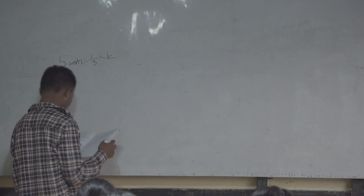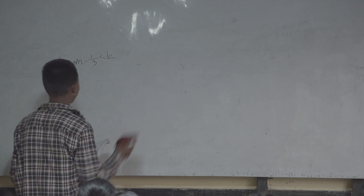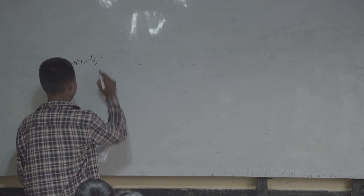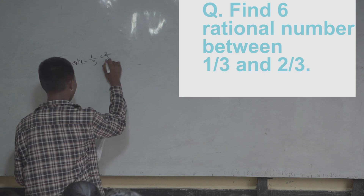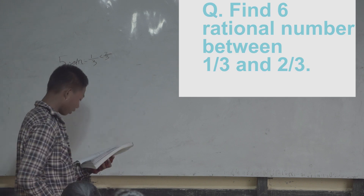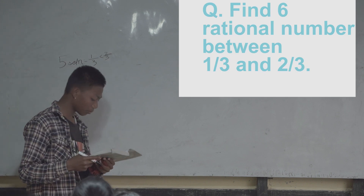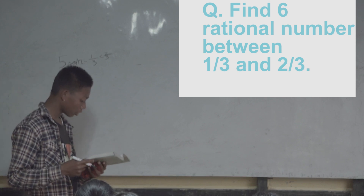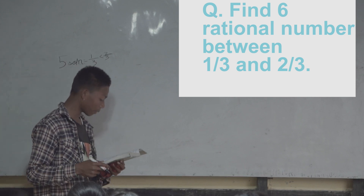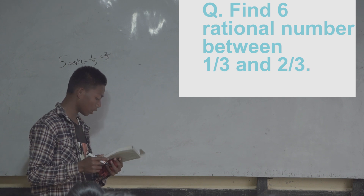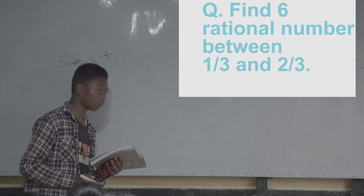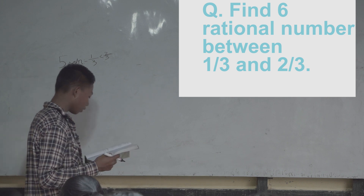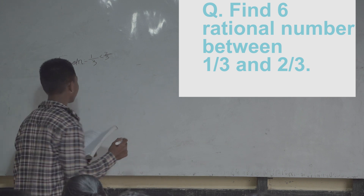Question one — look at the problem. The question is to find six rational numbers between 1/3 and 2/3. 1/3 and 2/3 are the given rational numbers.